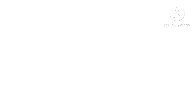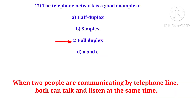Next question: the combination of two or more interconnected networks is called an internetwork. An internetwork is formed when we connect a LAN and a WAN or two LANs to each other. The telephone network is a good example.